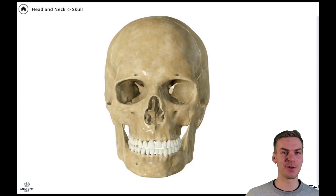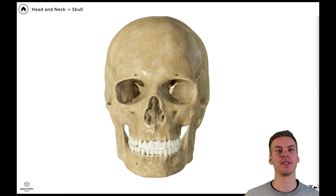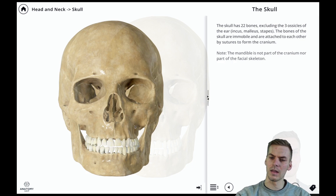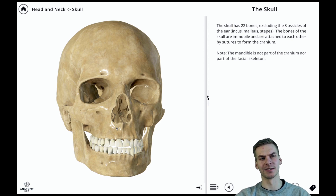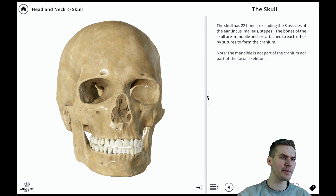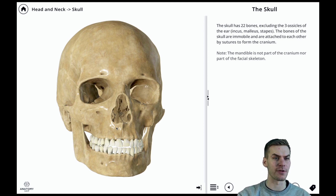Today we're going to talk about the very basic anatomy of the skull. I'm going to guide you through the different bones that the skull consists of, and we're also going to talk about the cranial cavity. The skull consists of 22 bones, excluding the three ossicles located in the middle ear. These bones of the skull are immobile and are attached to each other by sutures to form the cranium.